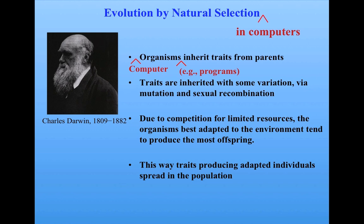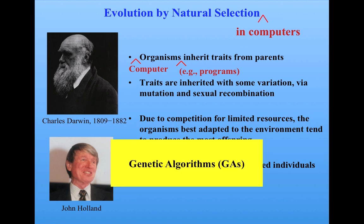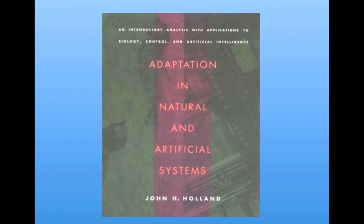One of the first people to develop this idea in any detail was a computer scientist, John Holland, at the University of Michigan, who in the 1960s and 1970s developed the idea of genetic algorithms, also known as GAs. Holland introduced the notion of GAs in his book, Adaptation in Natural and Artificial Systems, published in 1975. This book presented a mathematical framework for understanding adaptation in a very general way, one that went beyond biological adaptation and encompassed social, technological, and artificial adaptation in computers. The last part led to the development of genetic algorithms and their subsequent application in many real-world problems.